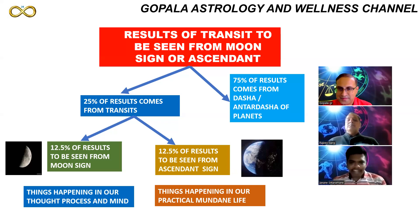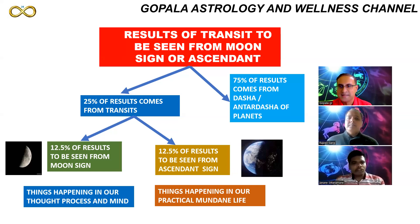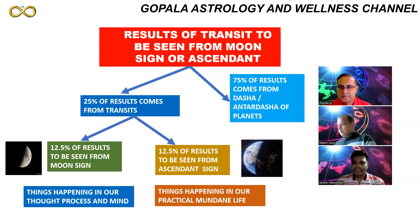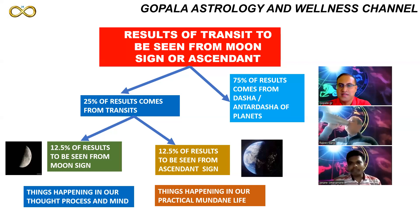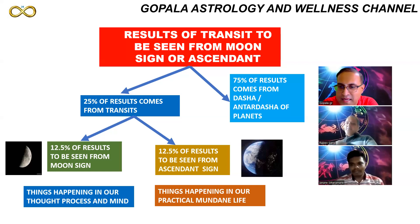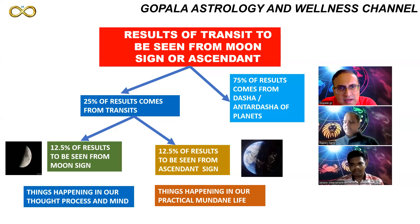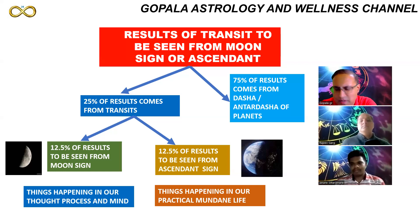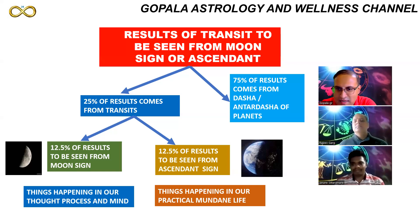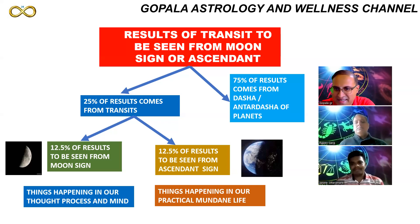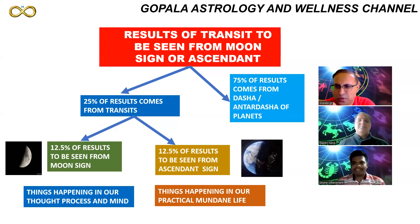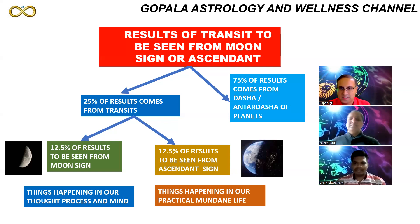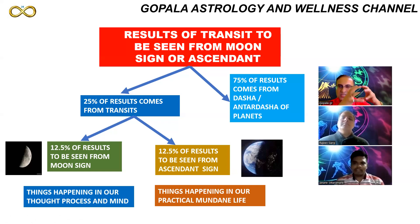Tamil asked: if 75 percent comes from dasha, why do people give more importance to transit? The host said this is the ignorance he wants to remove with this video. TV astrologers talk about yearly rashi palangal — for example, Simha Rashi predictions — but the actual Simha Rashi person does not see those results in real life and gets disappointed. The reason is they are missing the big piece: dasha and antar dasha is the elephant in the room, while transit results are small ants. Everyone's dasha and antar dasha are individually different for all eight billion people on this planet.